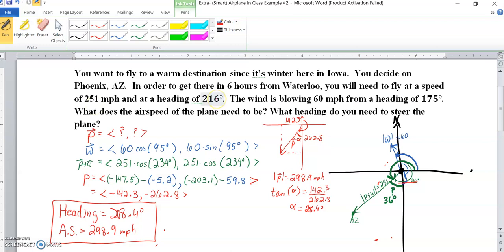The heading also makes sense, because if we need to get 216, which is over here, our airplane actually has to come out more like this, because the wind is going to push us a little bit more north than that, so that we end up in Arizona. So that is the smart pilot practice problem.